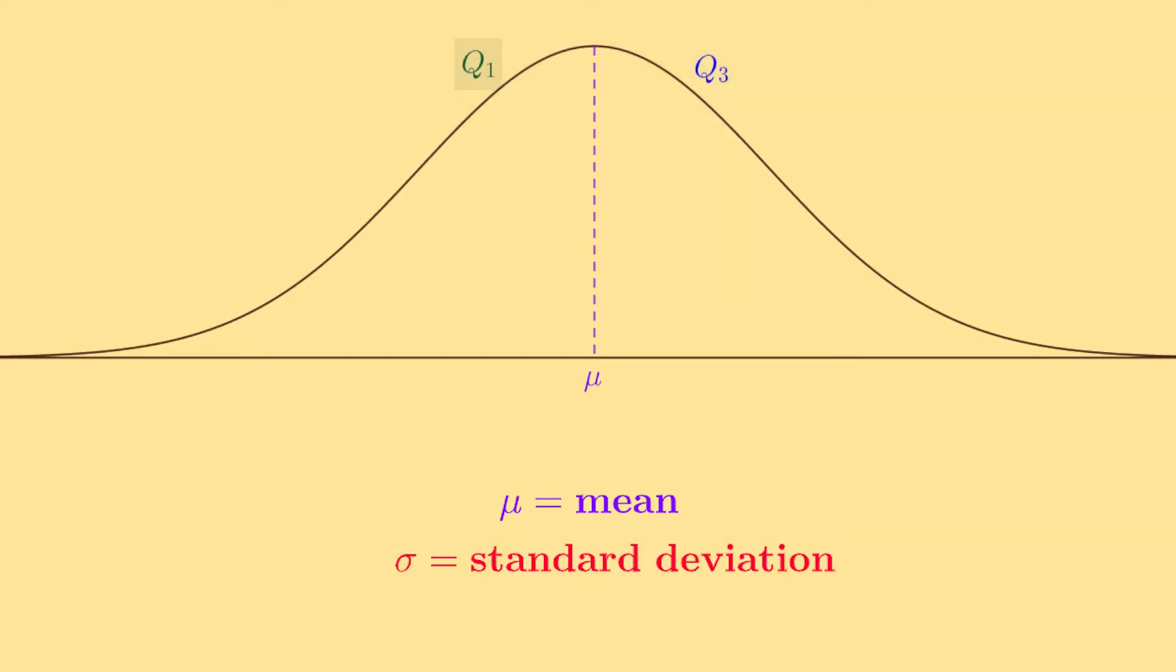The first quartile is located at the mean minus 0.67 times the standard deviation. The third quartile is located at the mean plus 0.67 times the standard deviation.